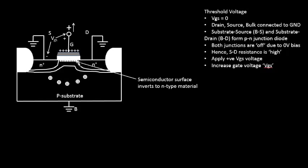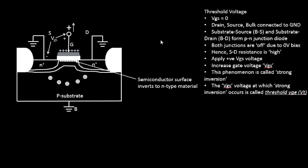Finally, there is a small area on the P-type substrate that completely converts itself to an N-type material. The voltage at which this happens is referred to as threshold voltage. This phenomenon — of a semiconductor surface inverting into an N-type material — is called strong inversion, and the voltage at which this occurs is the threshold voltage. This is the moment at which your device turns on.